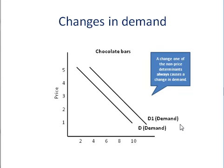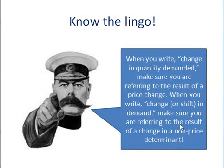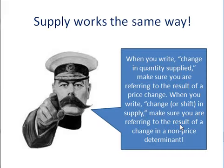So, a change in one of the non-price determinants always causes a change in demand. Likewise, a change in one of the non-price determinants of supply always causes a change in supply. You've got to know the lingo. When you write change in quantity demanded, make sure you're referring to the result of a price change. And when you write change or shift in demand, make sure you're referring to the result of a change in a non-price determinant. Now, this video was about demand, but supply works exactly the same way. Hopefully now you're comfortable with the difference between change in supply and demand versus the change in quantity supplied or quantity demanded. I'll see you soon.